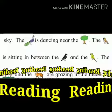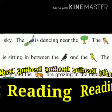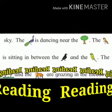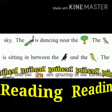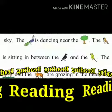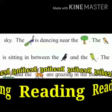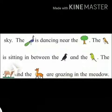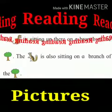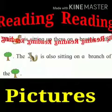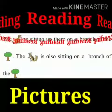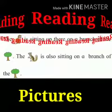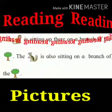The peacock is dancing near the tree. The sparrow is sitting in between the crow and the parrot. The cow and the deer are grazing in the meadow. The monkey is sitting up there on a branch of the tree. The squirrel is also sitting on a branch of the tree.